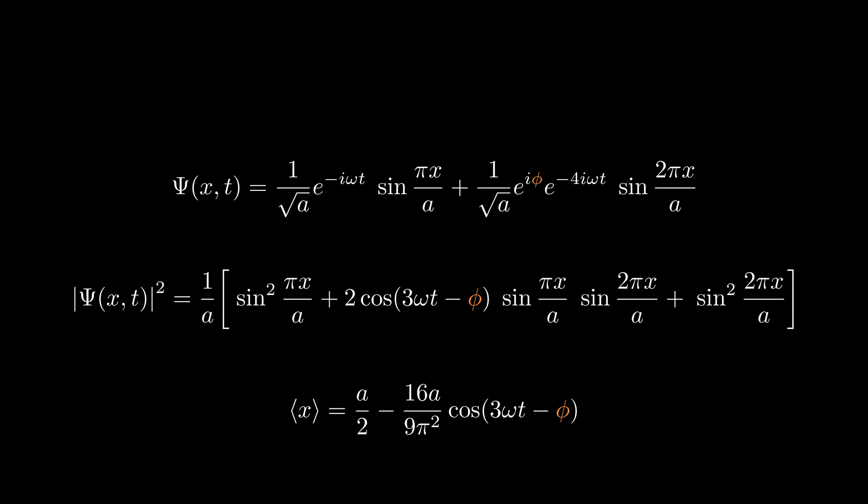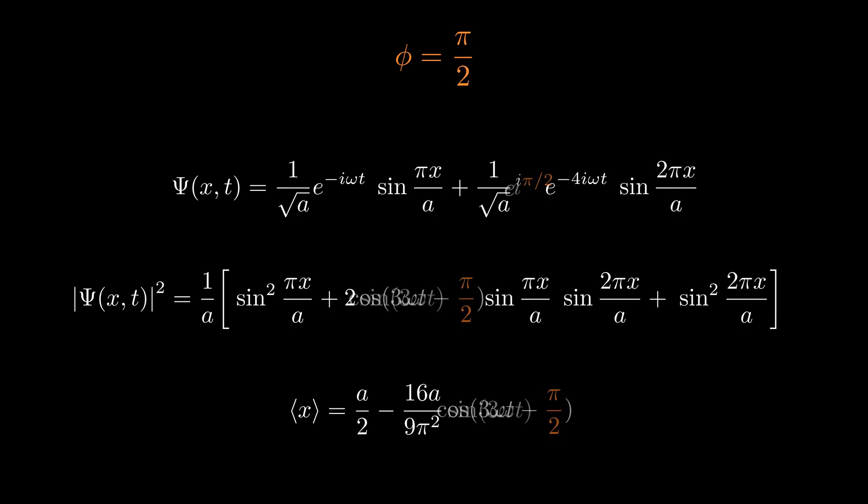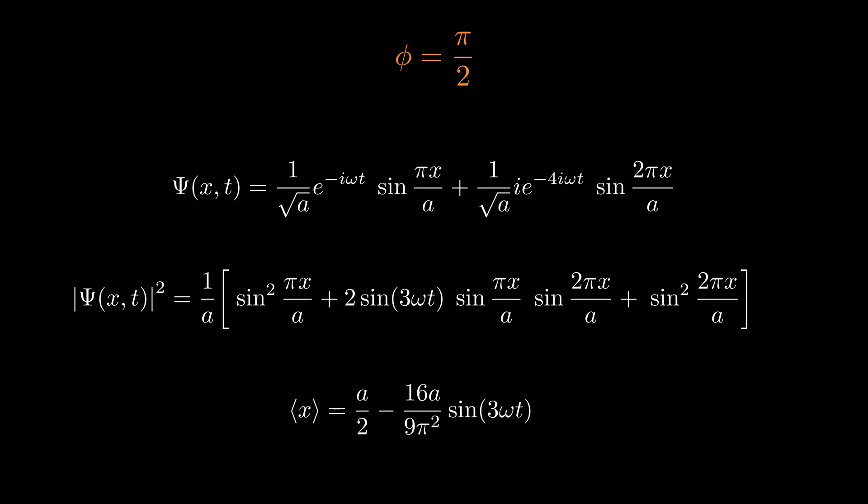First, let's set phi to π/2. Substituting this into our expressions, we get the modified wave function, probability density, and expectation value of position. Notice that in the probability density, the cosine term has transformed into a sine function, meaning the oscillations shift their phase. Similarly, in the expectation value of x, the phase shift inside the cosine effectively introduces a time delay in its oscillations. However, the amplitude and frequency remain unchanged — adjusting the relative phase alters the timing of oscillations but not their overall magnitude.